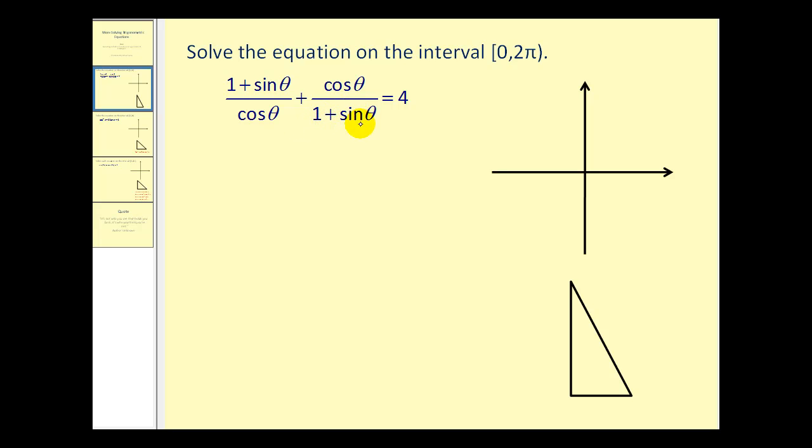But what I think might be helpful is multiplying this second fraction by the conjugate of the denominator. Let's see what this does. So this first fraction will stay the same. In the denominator, we're going to have one minus sine squared theta.